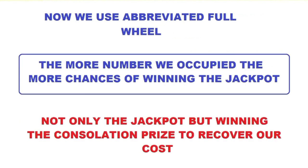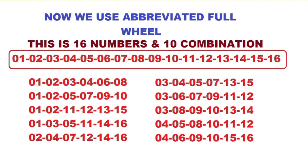The more numbers we occupy, the more chance of winning the jackpot — not only the jackpot but winning the consolation price to recover our cost. This is the 16-numbers and 10-combinations approach. This is an abbreviated wheel. By using 16 numbers we fully occupy 16 numbers. As you can see, the formula is 1 to 16.